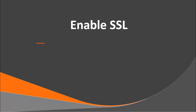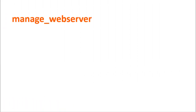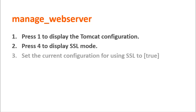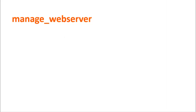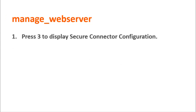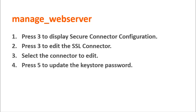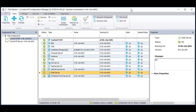Now we need to enable SSL mode and update the keystore password with the manage web server utility. First, let's turn on SSL mode. Press 1 to display the Tomcat configuration. Press 4 to display SSL mode. Set the current configuration for using SSL to true. Next, we need to update the keystore password. Press 3 to display secure connector configuration. Press 3 to edit the SSL connector. Select the connector to edit. Press 5 to update the keystore password. In the CCM, recycle the web server.